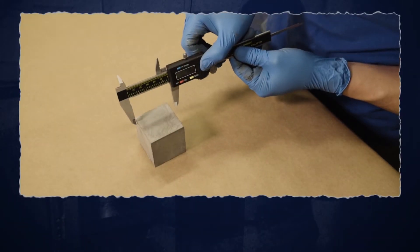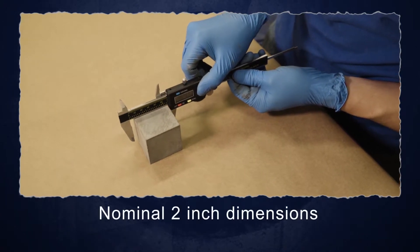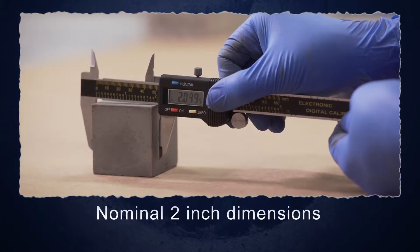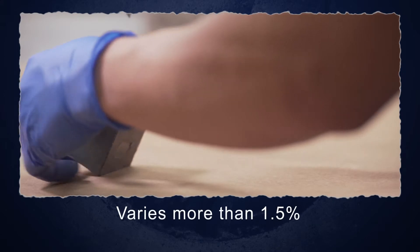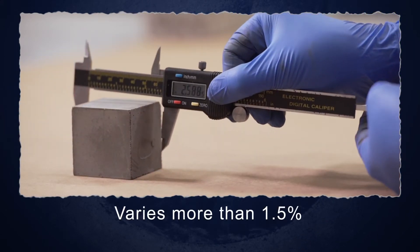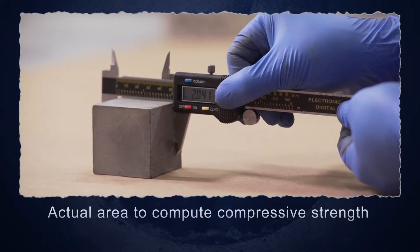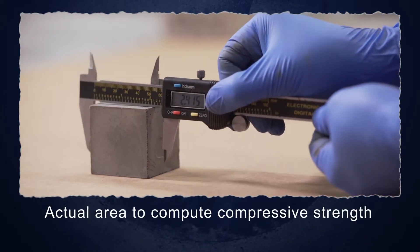Measure cubes to ensure that the actual dimensions match the nominal 2-inch dimensions. If the cross-sectional area of a specimen varies more than 1.5% from the nominal, then the actual area should be used to compute the compressive strength.